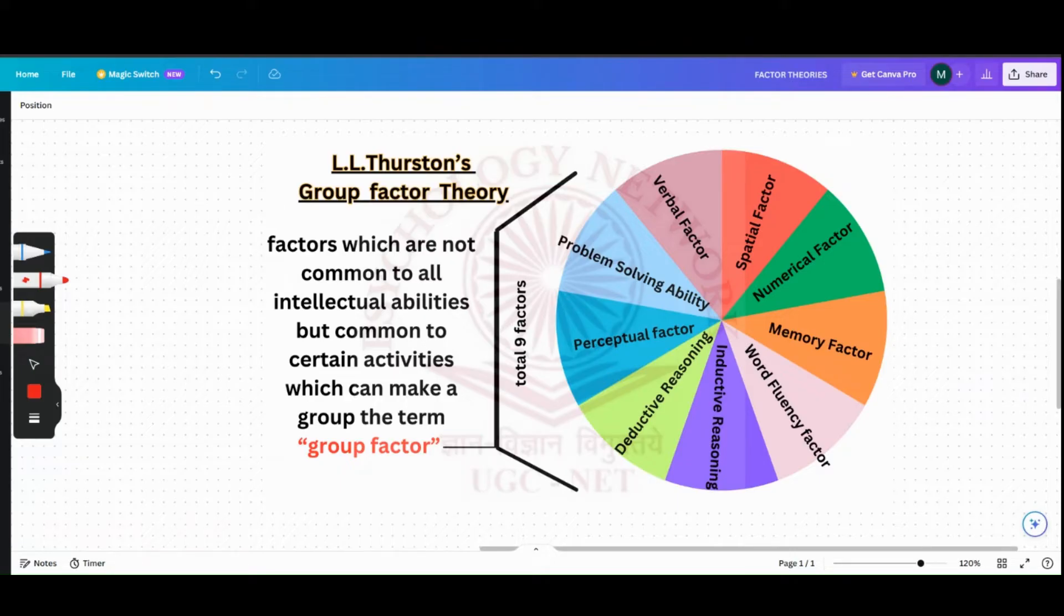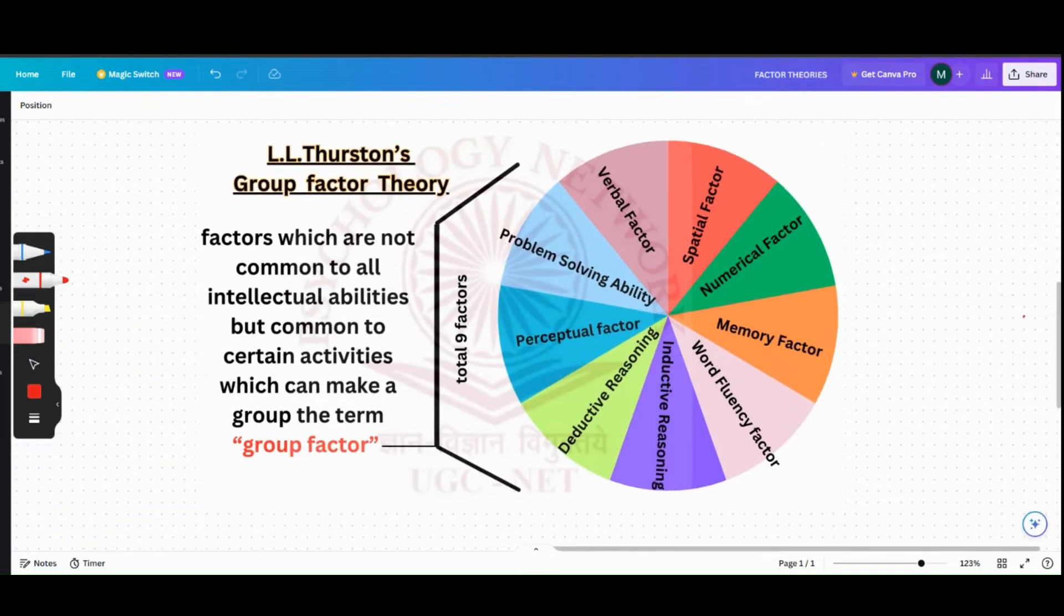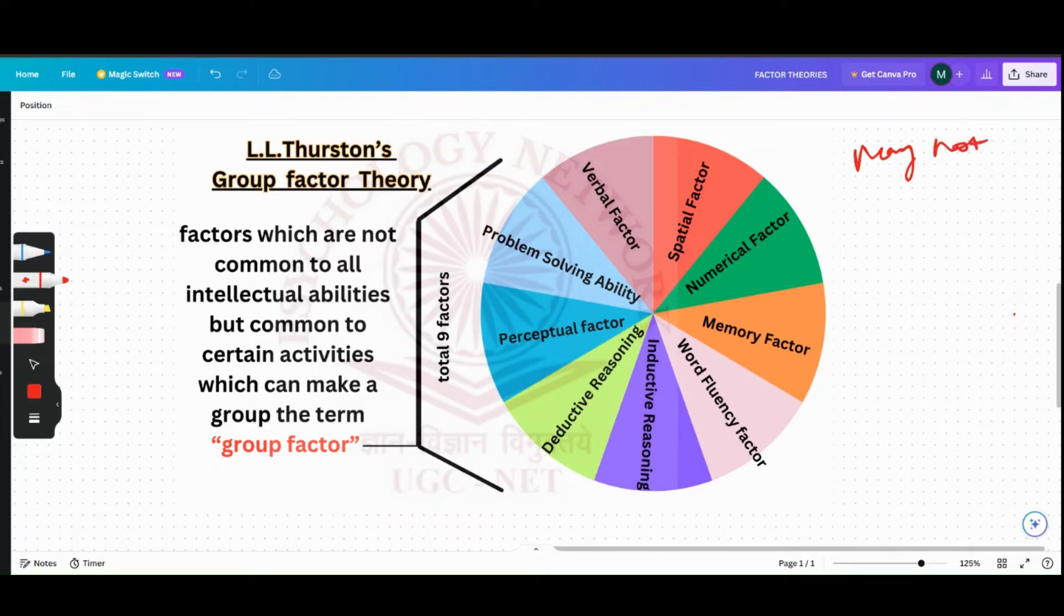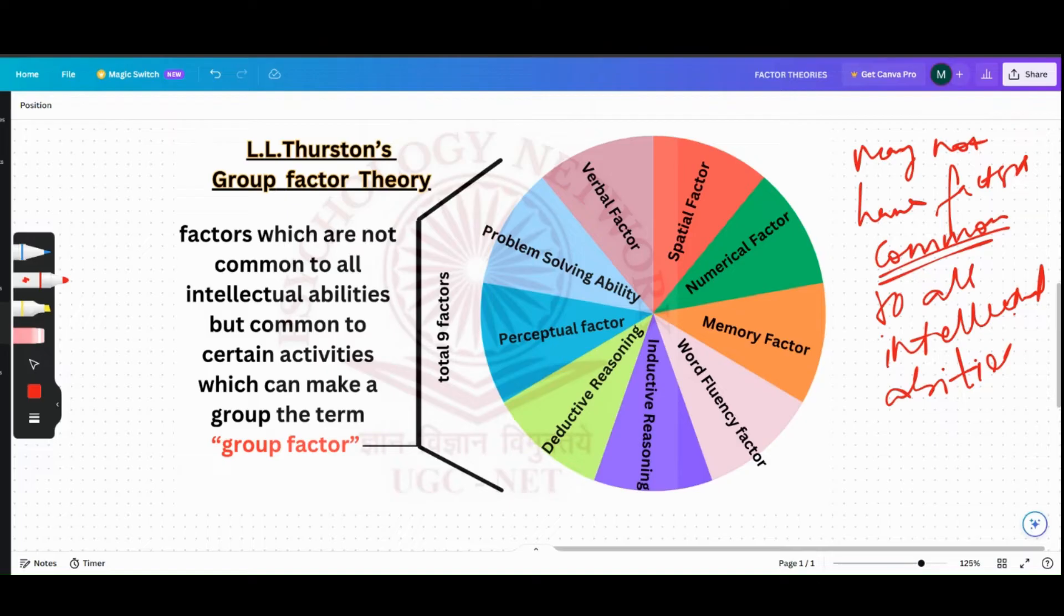Spearman's Two-Factor Theory was actually challenged by Thurston, who proposed that the general factor cannot be the only common factor as different professions could not be put into one group. So he was saying that an individual may not have factors common to all intellectual abilities.